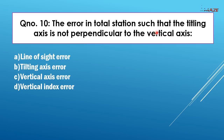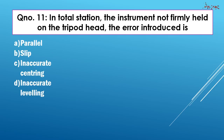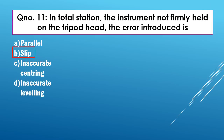Tenth question: The error in Total Station where the tilting axis is not perpendicular to the vertical axis is the tilting axis error. When the instrument is not firmly held on the tripod head, the error introduced is called slip error. This is an important question from previous years — the answer is slip.